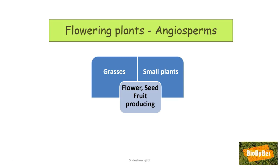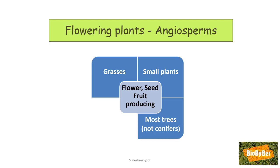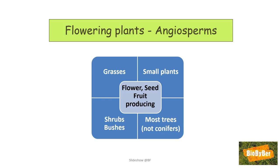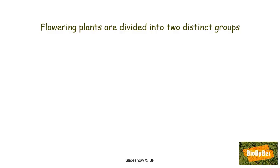Be careful not to include mosses and ferns — they are not flowering plants, they are not angiosperms, they belong to another group. Most trees are angiosperms or flowering plants, but not conifers. Conifers, like pine trees or Christmas trees, belong to another group called gymnosperms. Lastly, most shrubs or bushes you would see in the garden, like gorse bushes, are also flowering plants.